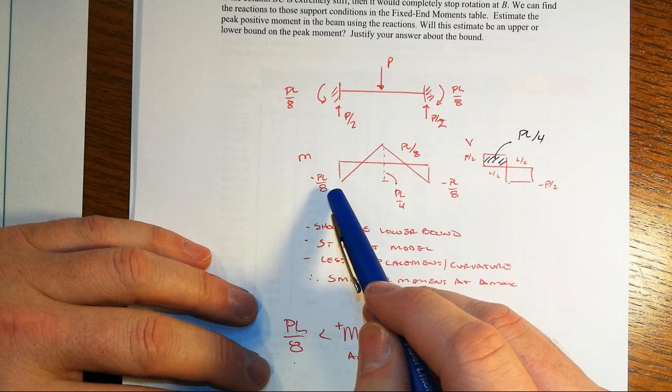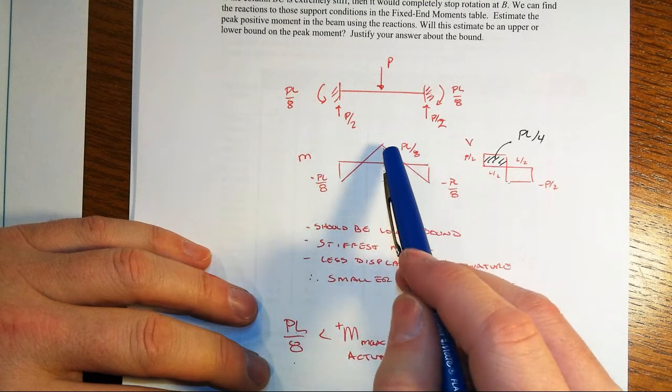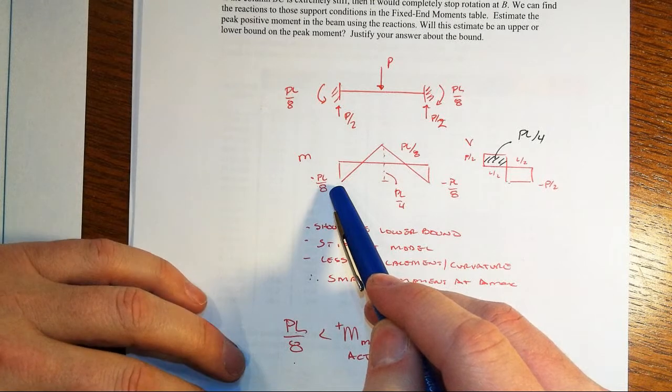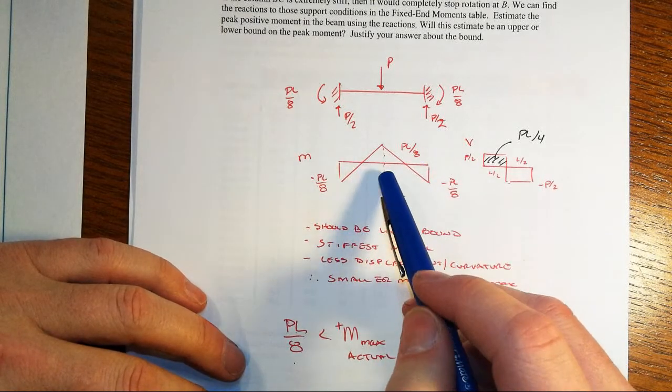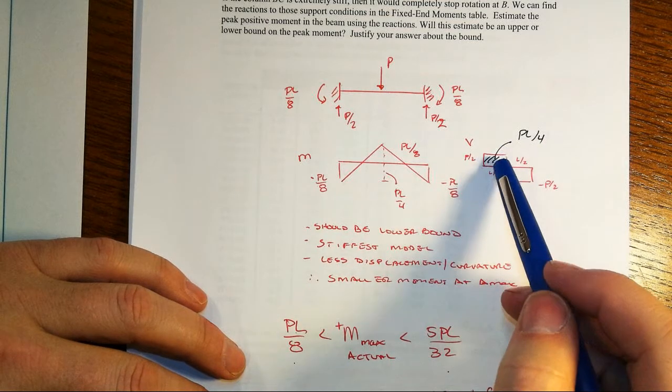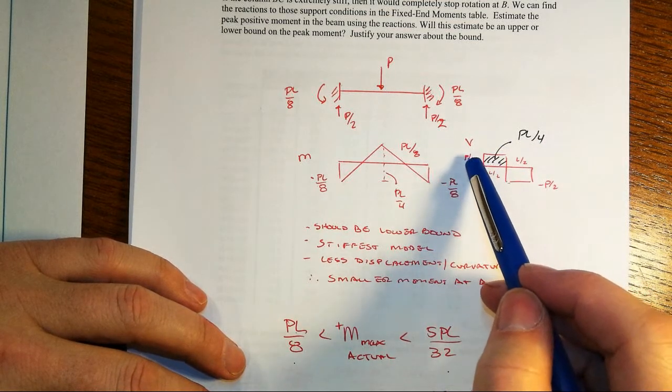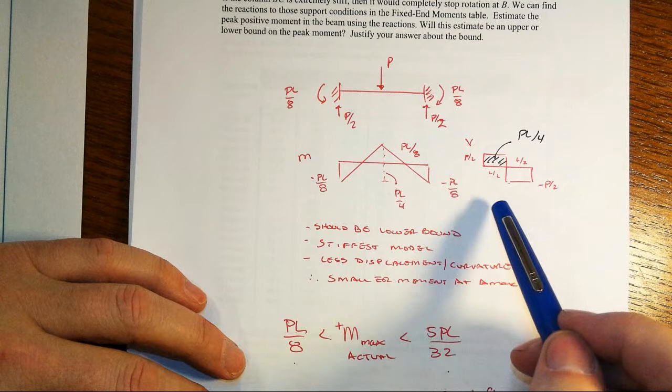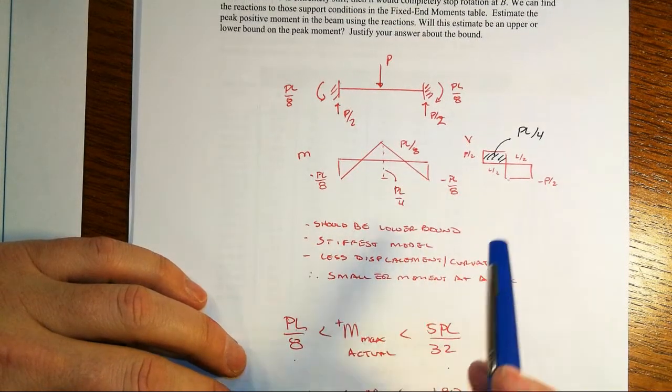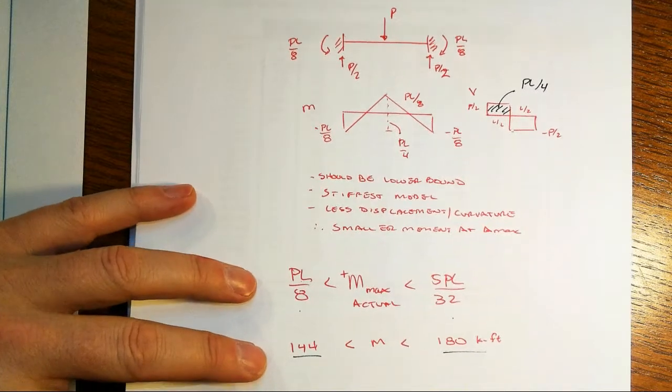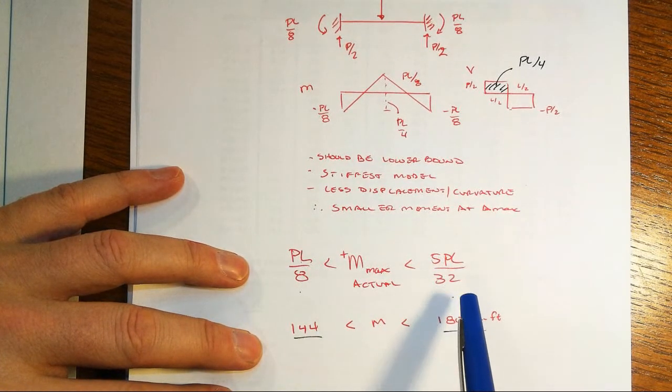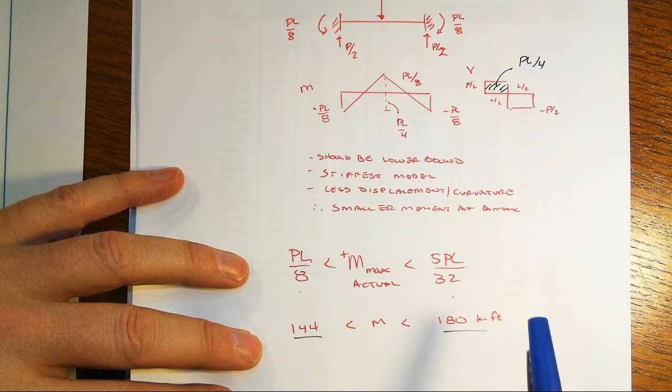It closes off, and that gives us then a moment diagram that actually has the max positive and max negative moments the same magnitude at PL over 8. There's a total net change of PL over 4 from the end to the middle, right, and that's just given to us by P over 2 times L over 2 or PL over 4 to get us that net change, right? And so this should be a lower bound, and sure enough it is. PL over 8 is less than 5PL over 32, which is the equivalent of what we have in that other case.